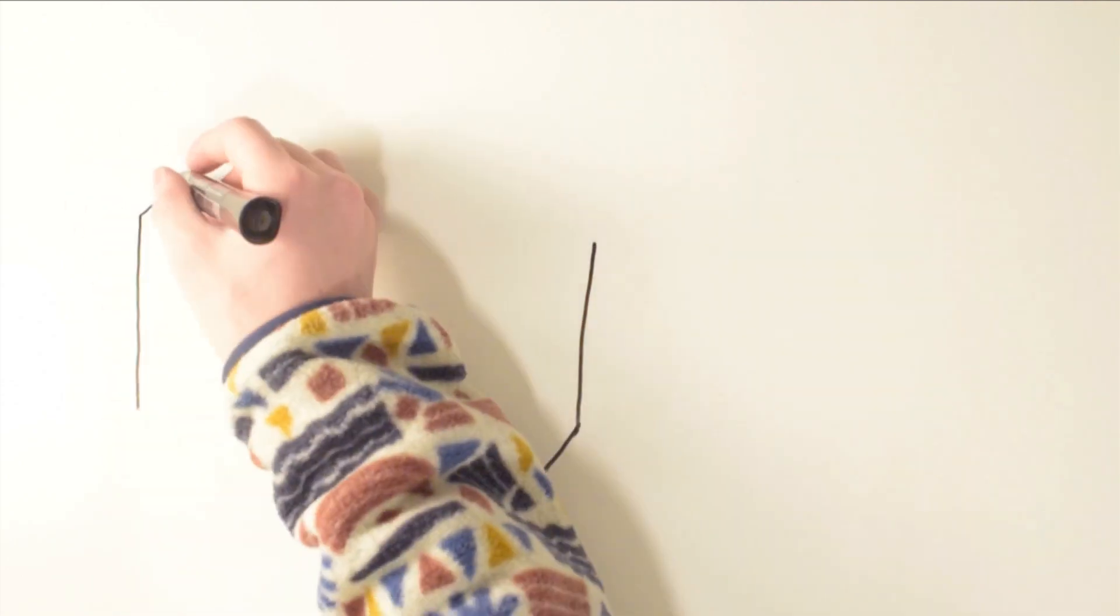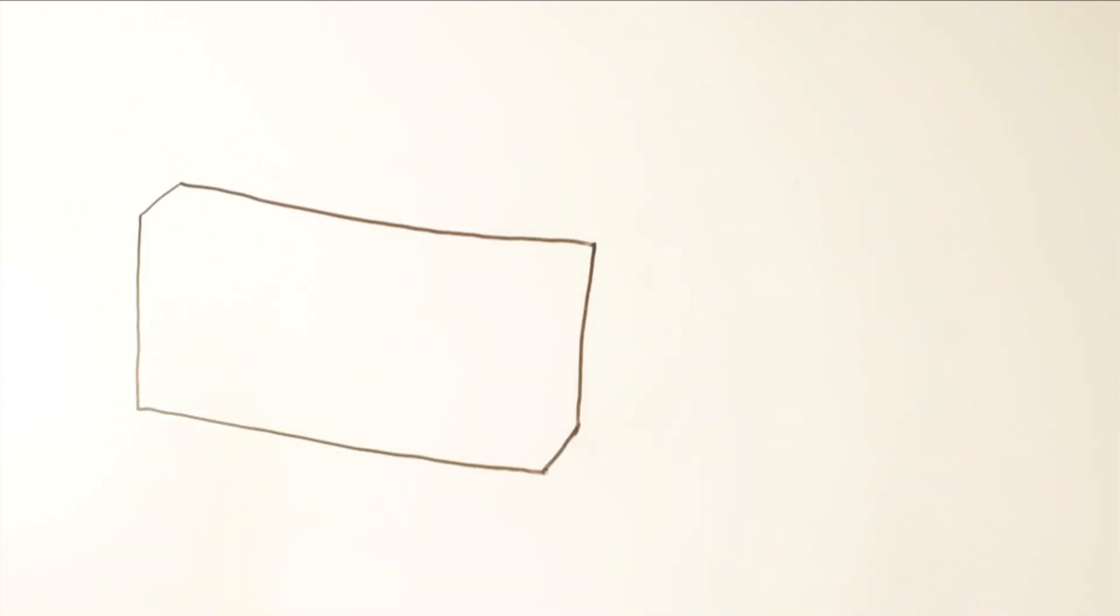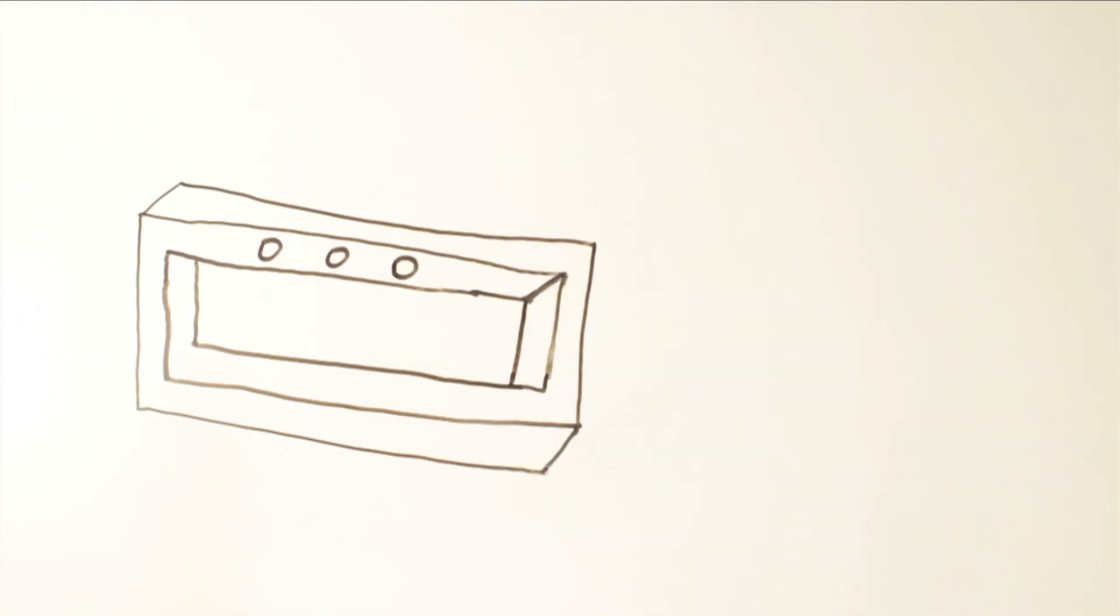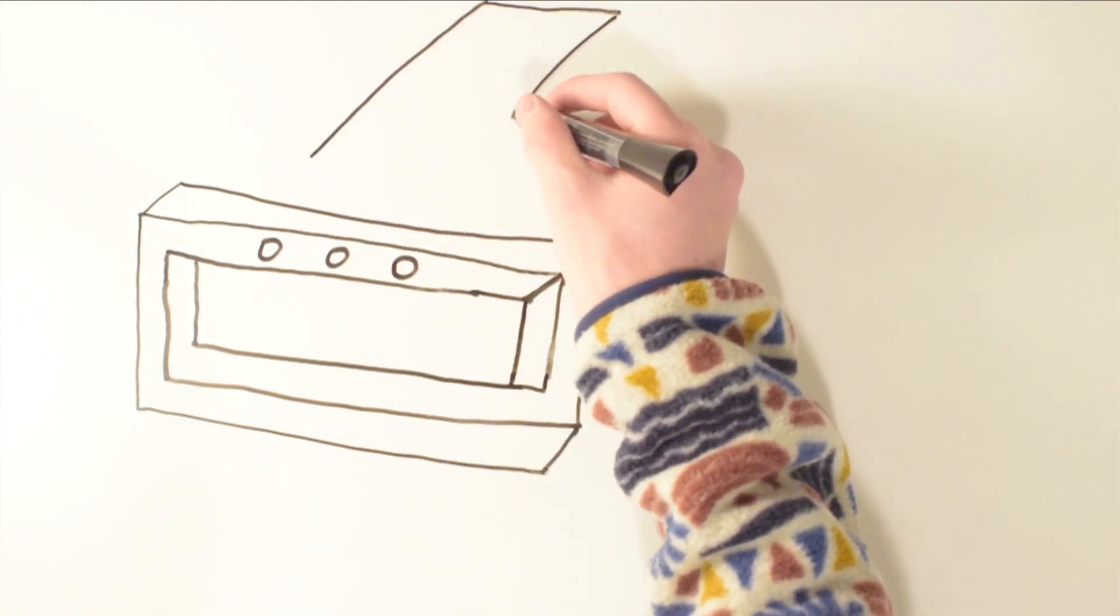One aspect of engineering, or at least mechanical engineering, that can be particularly daunting at first is engineering drawings. They are often a maze of lines and symbols that seem very confusing, and to say that they are always laid out in a readable manner would be a joke.